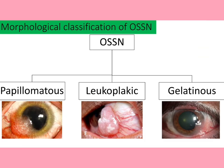Morphologically, OSSN is classified into three types: papillomatous, leukoplakic, and gelatinous. Papillomatous OSSN is mostly benign and more common in pediatric patients, and is non-invasive. Leukoplakic OSSN is in the pre-invasive stage. Gelatinous OSSN appears in two forms — nodular and diffuse — and can spread over the cornea.